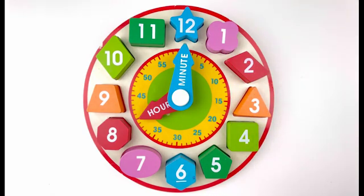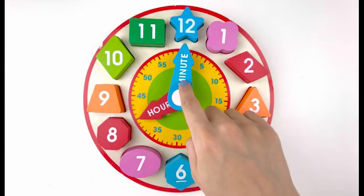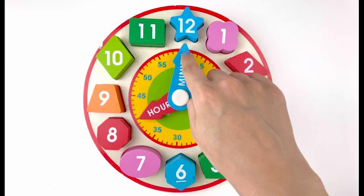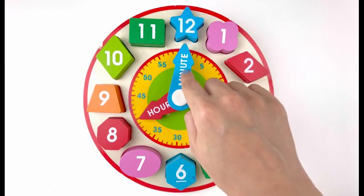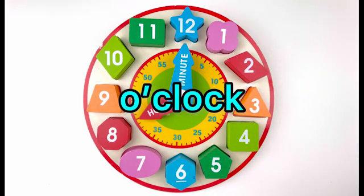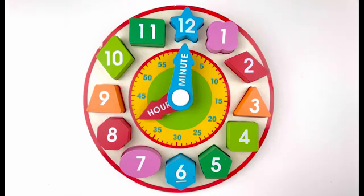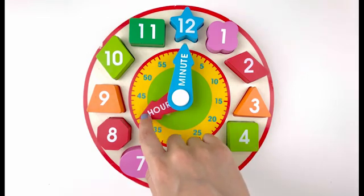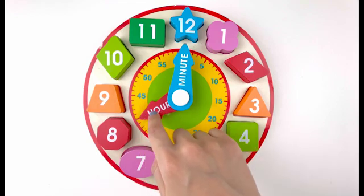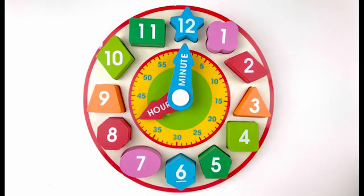Now I want to teach you a cool trick to help you read the time. When you see the minute hand pointed straight at the top on number twelve, say the word o'clock. Next, check the number that the hour hand points to and put that number with o'clock. Let's try a few examples.